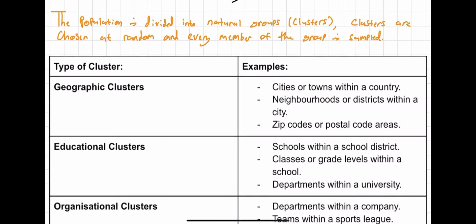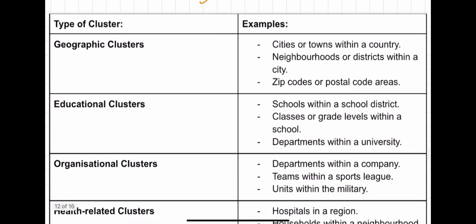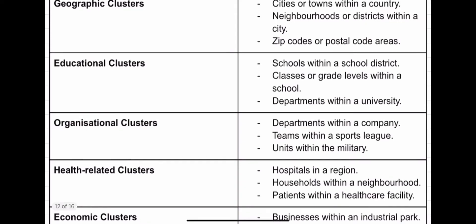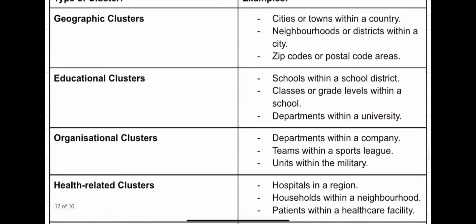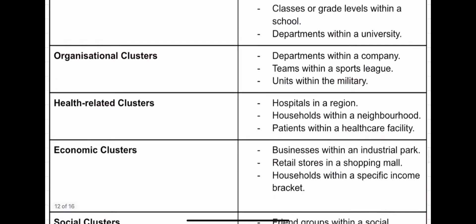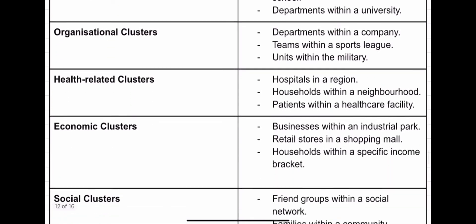Examples are cities and towns within a country — these are natural. Neighbourhoods or districts, zip codes or postal code areas, schools within a school district, classes or grade levels within a school or year groups, departments within a university. As you can see, these are types of natural groups and would be examples of clusters that may be used in a question.